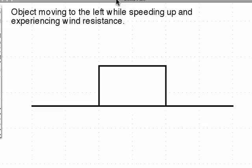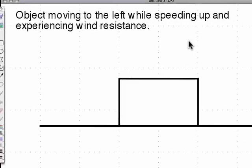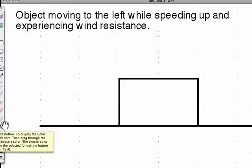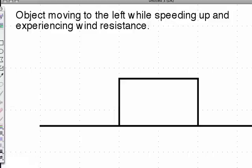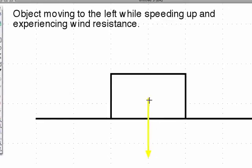Next one. Here is an object that's moving to the left and speeding up, and it's experiencing wind resistance. So it's going this way to the left, and even before I think about that too much, I'm going to draw my other forces. In this case, the other forces, because it is an object, it's got to have a gravitational force, and because it's not moving up or down, then we've got to have our normal force.